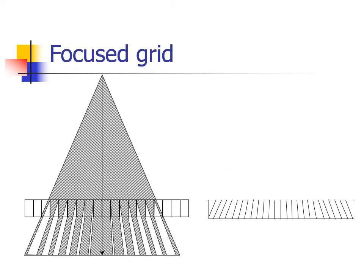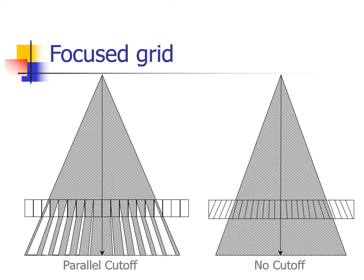With the parallel grid, when radiation is projected through it, the grid cuts off the peripheral rays. With the focused grid, the angle of the lead strips mimics the angle of the X-ray beam, thereby eliminating cutoff.